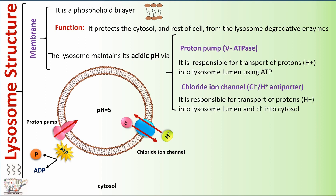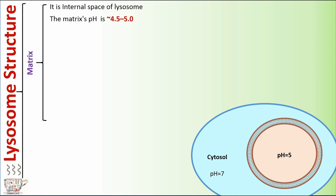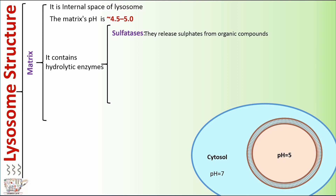The chloride ion channel is responsible for transport of protons into the lysosome lumen and chloride into the cytosol. The second part is the matrix, which is the internal space of the lysosome. The matrix pH is approximately 4.5 to 5. It contains hydrolytic enzymes such as sulfatases, which release sulfates from organic compounds.